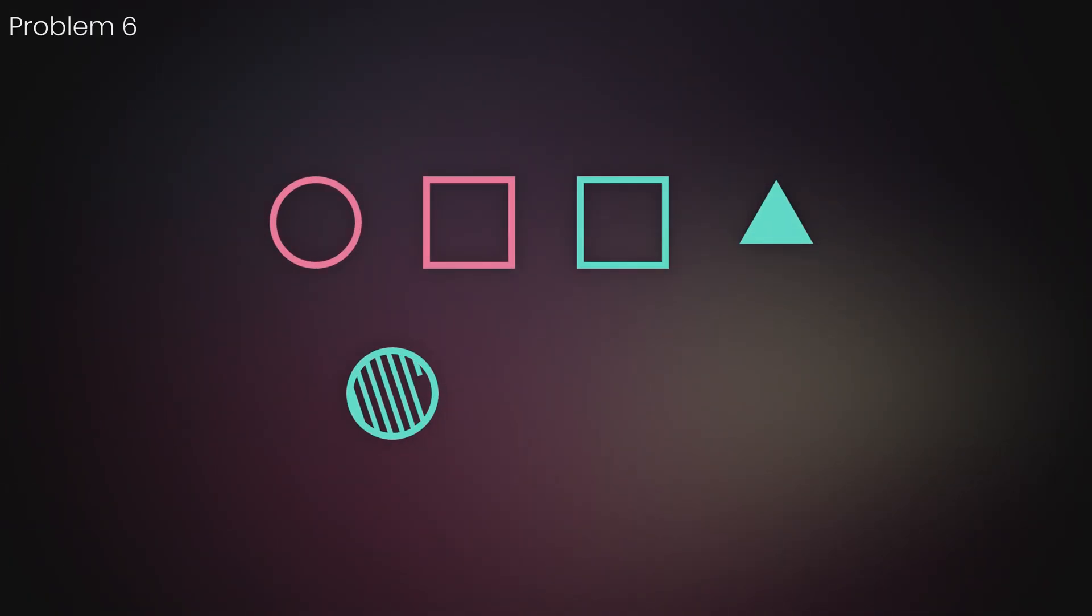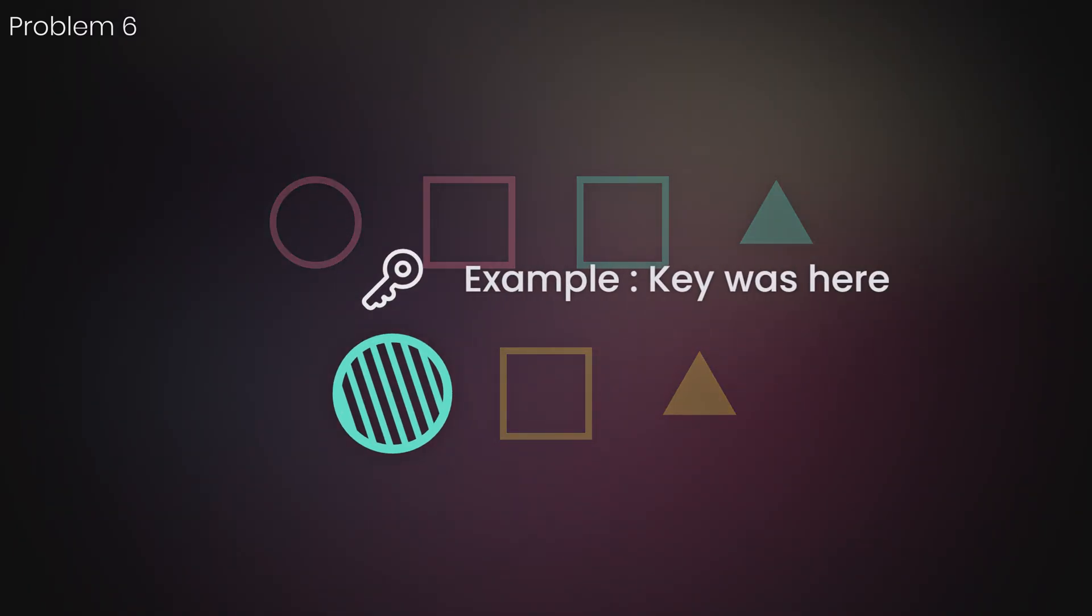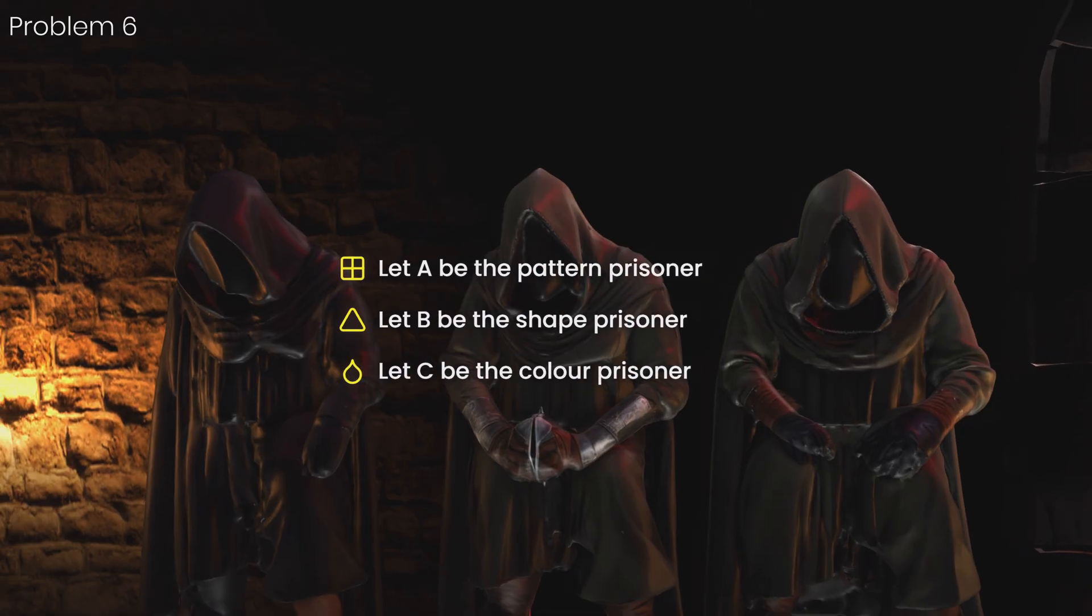What is the probability that you succeed if you play optimally? The first step is to form a sound strategy for when you know which prisoner knows which attribute. Let A be the pattern prisoner, B be the shape prisoner, and C be the color prisoner.